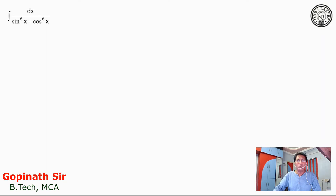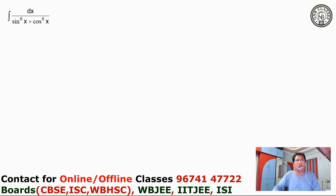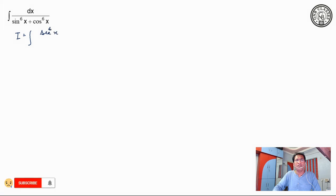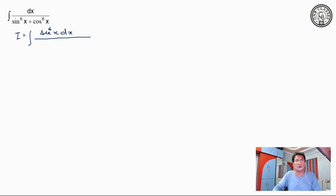So, how to solve this problem? What I will do is basically divide numerator and denominator with sec to the power 6x — that is, I am dividing both numerator and denominator with cos to the power 6x. So, we are getting tan to the power 6x plus 1 in the denominator.